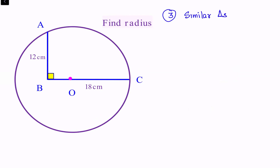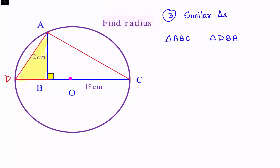Let's first form the triangles. BC is extended to point D, then we join AC and AD. We will be comparing triangle ABC and triangle DBA — the yellow triangle and the blue triangle. Both triangles are right-angled. This angle is 90 degrees, and since DC is a diameter, a diameter always subtends an angle of 90 degrees, so this angle is also 90.